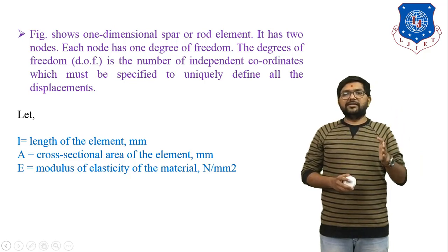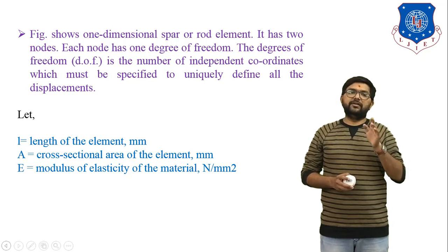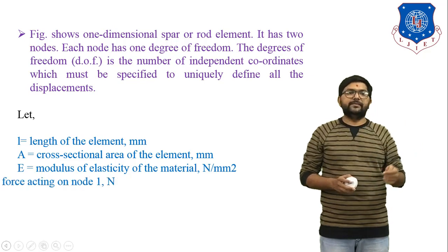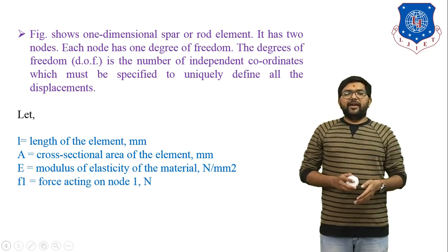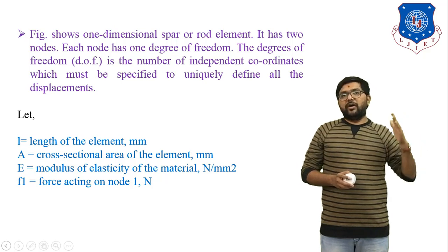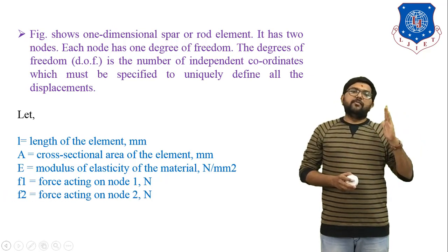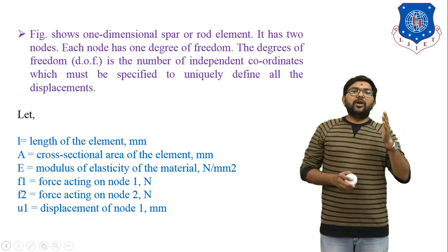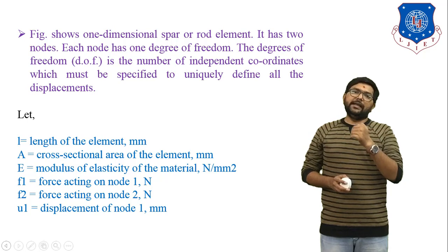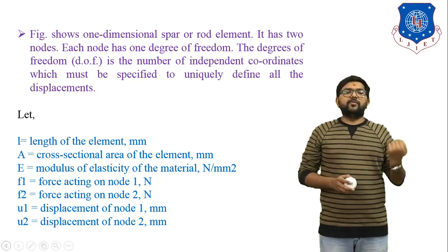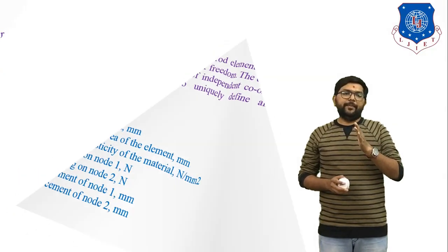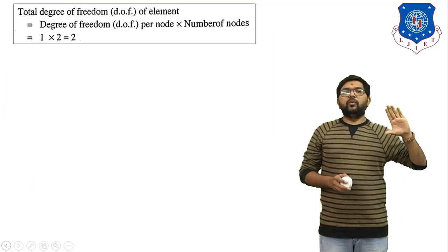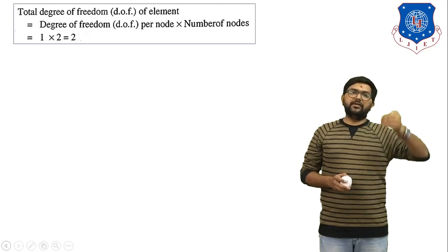The modulus of elasticity equals stress divided by strain, so sigma equals E times epsilon — stress equals modulus of elasticity times strain. Small f1 indicates the force acting on node 1 in newtons, f2 the force on node 2 in newtons, u1 the displacement of node 1 in mm, and u2 the displacement of node 2 in mm.